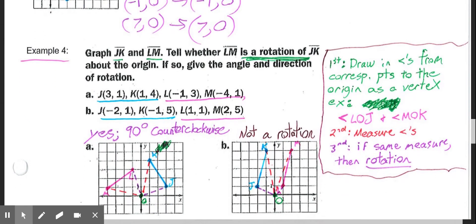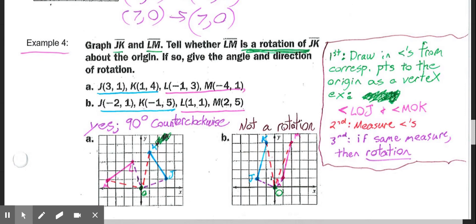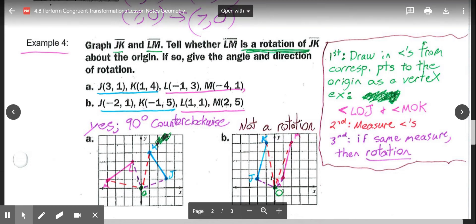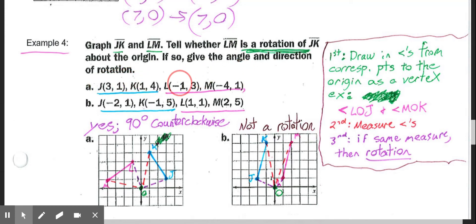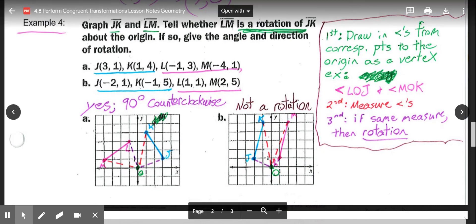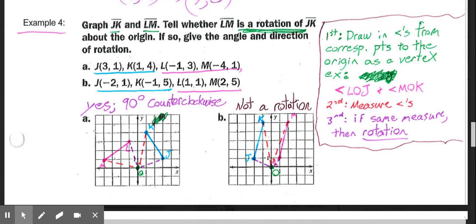Now it's asking us to graph segments and tell whether it's a rotation of the original about the origin. If so, give the angle and the direction. So first things first, we just want to graph segment JK and LM. JK is at (3, 1) and (1, 4). So graph over 3 up 1, over 1 up 4, and connect them to draw JK. Then do the same with LM: (-1, 3), (-4, 1), connect those.